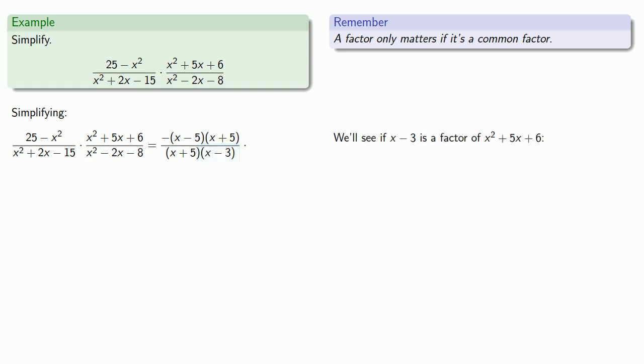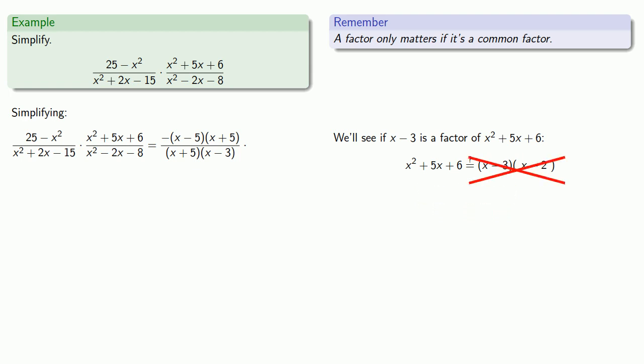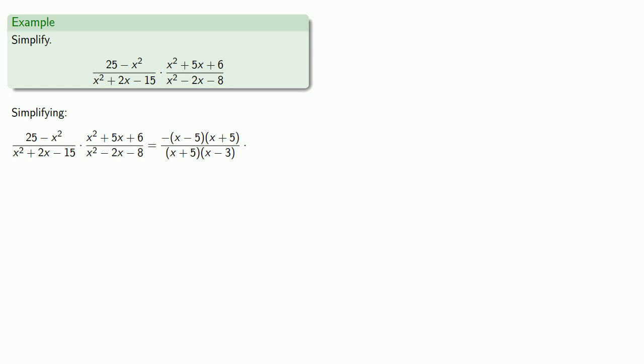So we check whether x minus 3 is a factor of x squared plus 5x plus 6. Can we write x squared plus 5x plus 6 as x minus 3 times something? The something would need an x and a minus 2. We check — and nope, it's not. It's hard to overemphasize how important it is to check whether a known factor divides another polynomial, because without a known factor we have to rely on trial and error.